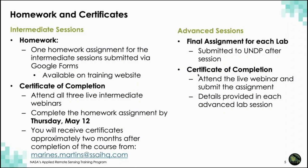For all three of the intermediate sessions, we will have one follow-on homework available on the course website. To receive credit for this homework, you must submit your answers via Google Forms by the deadline of Thursday, May 12th. The link to the homework will be available on the RSET website during the final intermediate session, so please check back on the website on April 28th for that homework link. To receive a certificate of completion, you must attend all three live intermediate webinars and complete the homework by the deadline. You can expect to receive your certificate about two months after the completion.